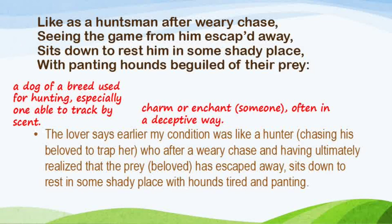Let us start with the first quatrain — the first four lines of the sonnet. It goes like this: 'Like as a huntsman after weary chase, seeing the game from him escaped away, sits down to rest him in some shady place, with panting hounds beguiled of their prey.'